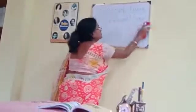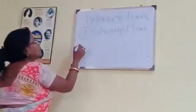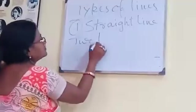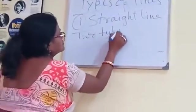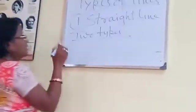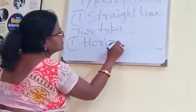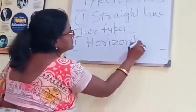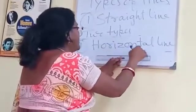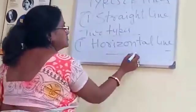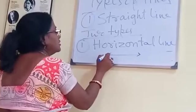And straight lines are also two types. Number one is horizontal line. We can draw horizontal line in this way. It goes straight across.